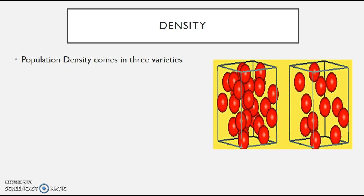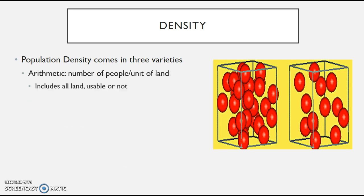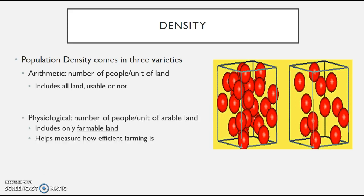Population density in human geography comes in three varieties. You're probably most familiar with the first one: arithmetic density. This is the one you likely learned in science — it's basically an average. It's the number of people per unit of land, and this includes all land, whether it's usable or not. It gives you a baseline number telling you, on average, how many people are in any given area.